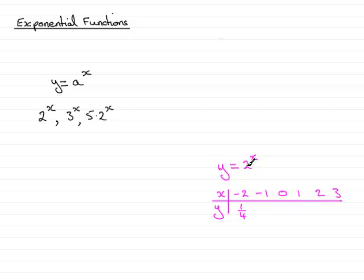And when x is minus 1, you've got 2 to the minus 1, which is 1 over 2 or a half. When x is 0, anything to the power 0 is 1. When x is 1, you've got 2 to the power 1, which is 2. When x is 2, 2 times 2 is 4. And when x is 3, you've got 2 cubed, which is 8.